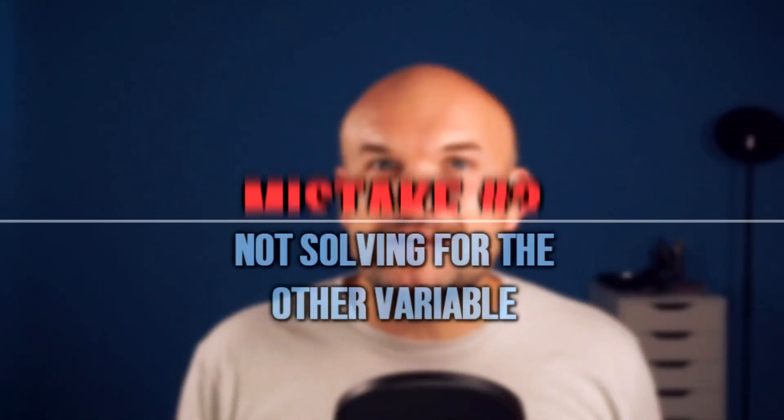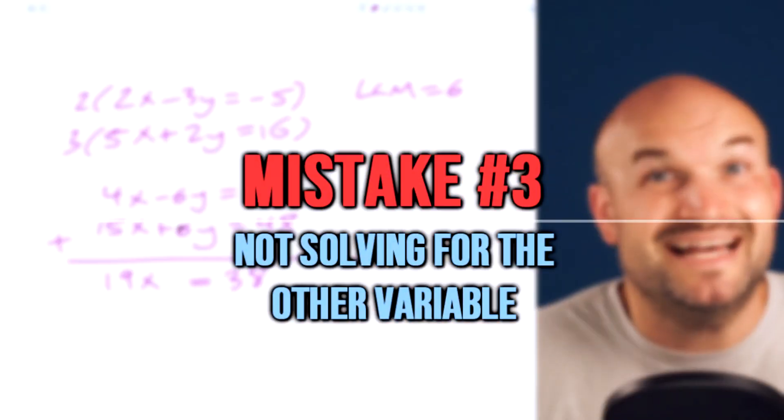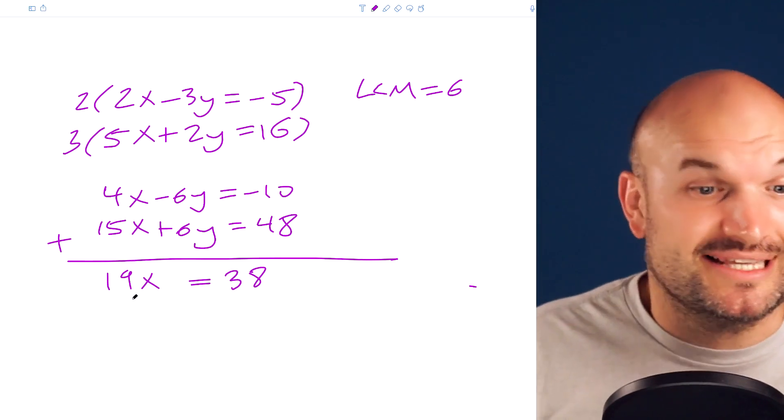We have two variables that we're trying to solve, an x and a y. So it's very important when we're looking for the solution of a system of equations that we identify the value of all of our variables. And in this case, we have an x and a y. So mistake number 3 is students solving for one variable and not solving for the other. And again, it's pretty simple.